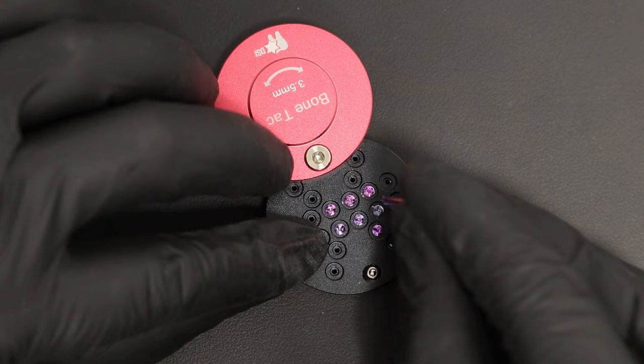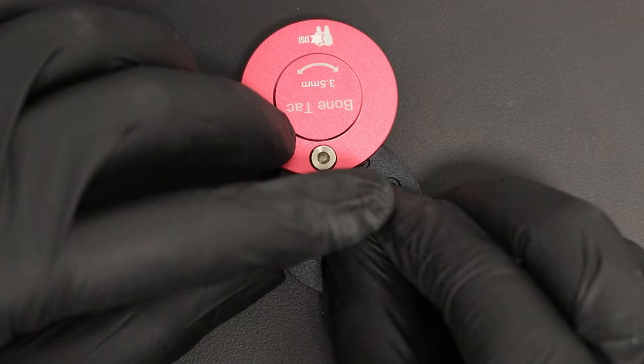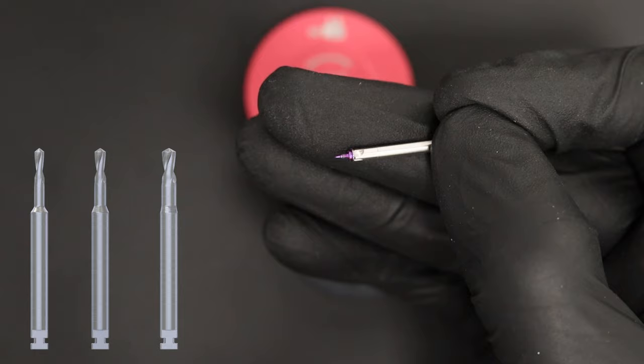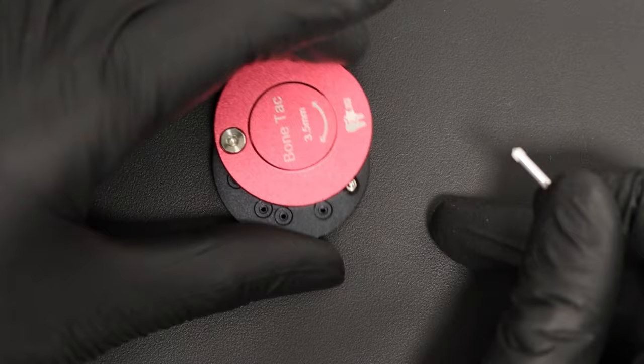After the surgery, the tags can be removed using the large type driver with the contra-angle. For the cases of very dense D1 cortical bone, we include a set of pilot drills, but in most indications you could simply put the tag applicator and apply slight pressure on it.